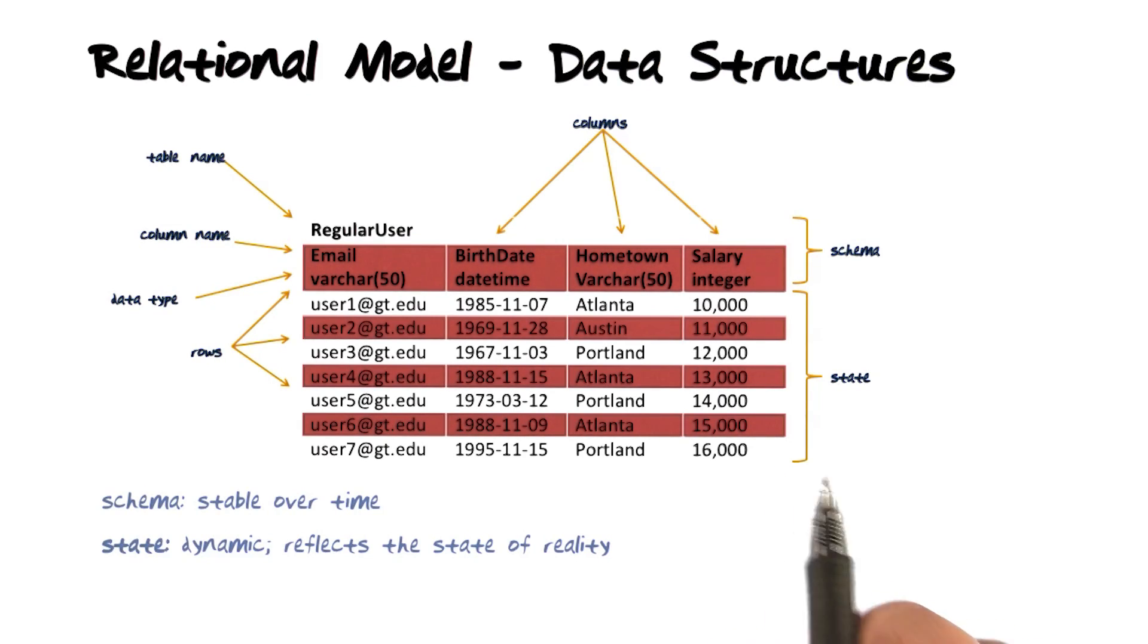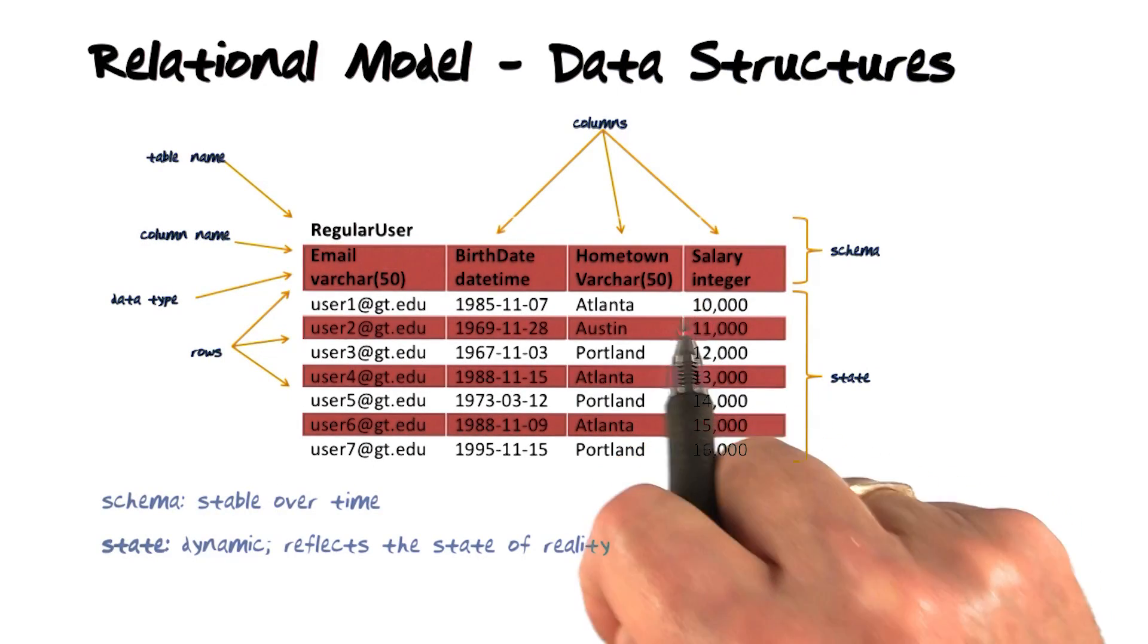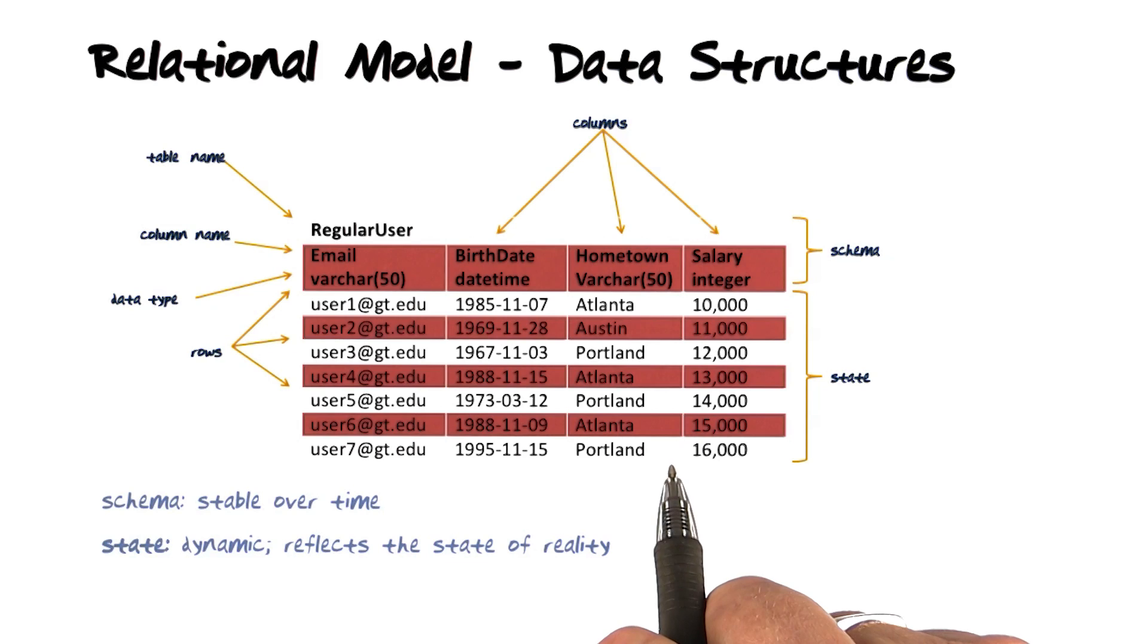So the idea is that whereas the schema in general represents the structure of data, the rows will represent what is the current state of reality that's modeled by this table.